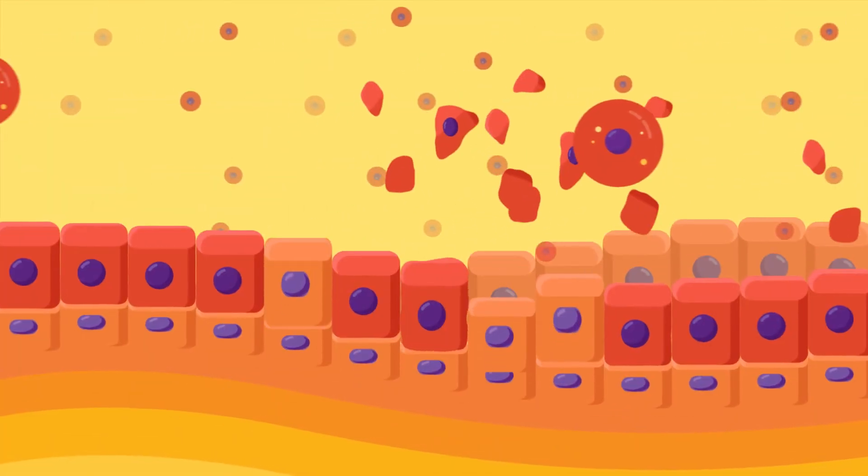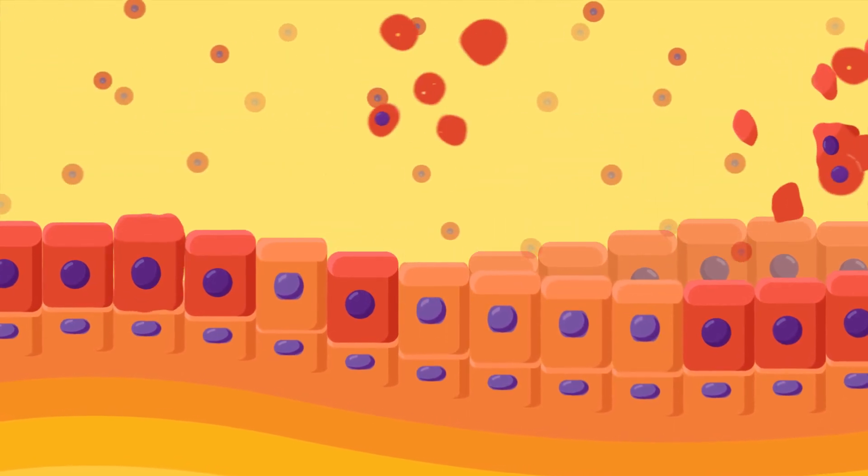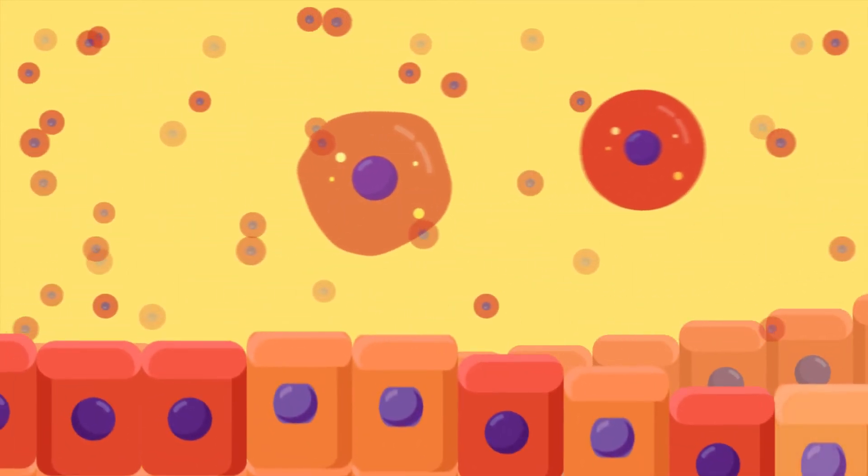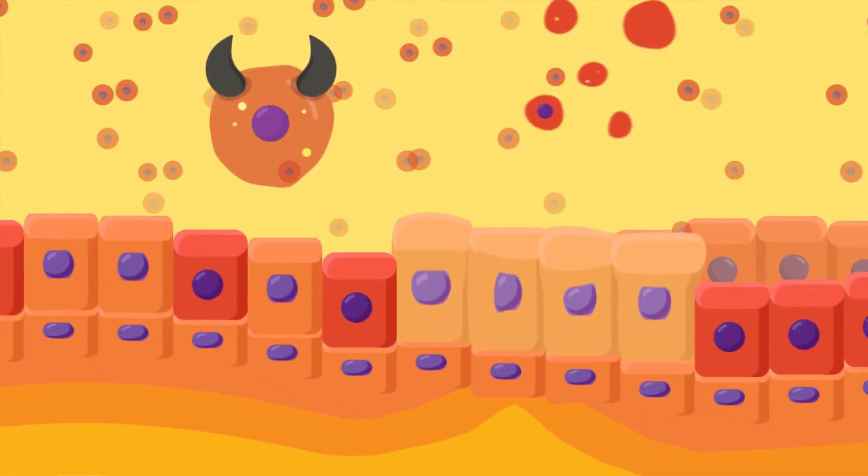Apoptosis is a normal, natural process which is necessary for the body as it maintains a balance in the number of cells in the body. If the cells do not die on time, it can lead to a tumour or cancer formation, which is an accumulation of unwanted cells.